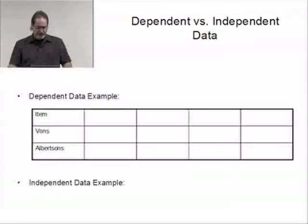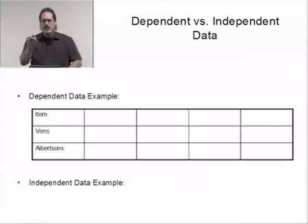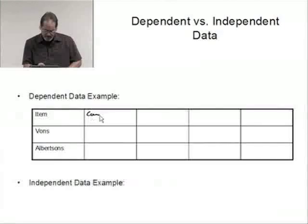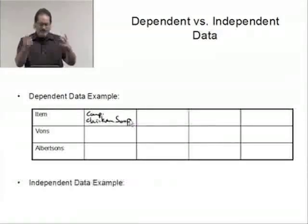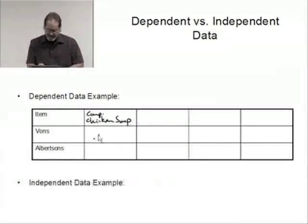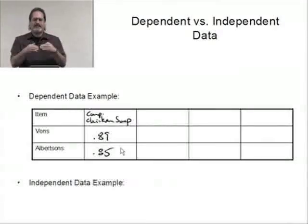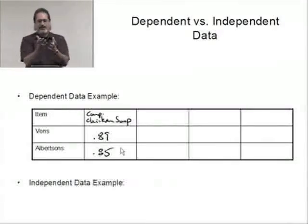Let's take a look at another classic dependent data example. Suppose you're doing a price comparison test with Vons and Albertsons. This is actually dependent because you go out and maybe the first item to look at is Campbell's chicken noodle soup. You go to Vons and how much is that soup there? Maybe it's 89 cents for that can of soup. And Albertsons, maybe it's 85 cents. The natural pairing, the connection, is it's the same soup. No, it's not the same physical can, but it's Campbell's, it's the same brand, it's the same size, it's the same everything. So that's the connection, that's where we're pairing it.